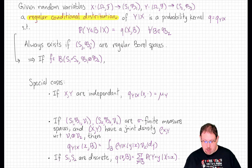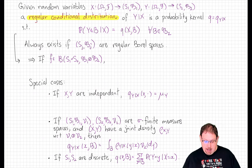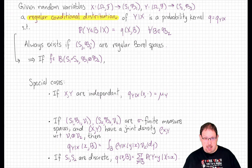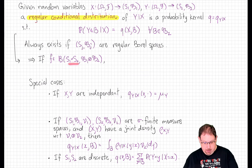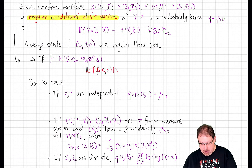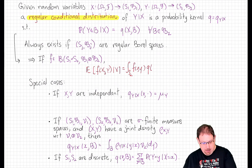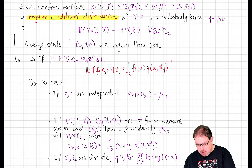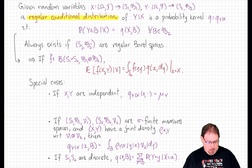We saw that these always exist if the state spaces are nice enough — for example, if they are regular Borel spaces. And as you showed on your homework, we can also boost this to a jazzed-up pullout product rule, which says that if f is a function of both variables, then the conditional expectation of f at X and Y given X can be computed by integrating over the second state space the function f at little x and little y against the regular conditional distribution probability kernel q of x and dy, which gives a function of x that we evaluate at little x equal to the random variable capital X.